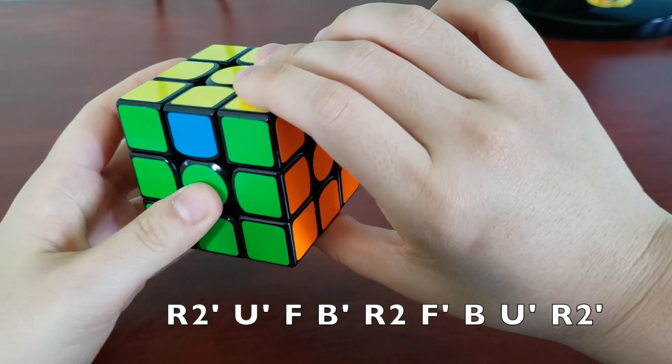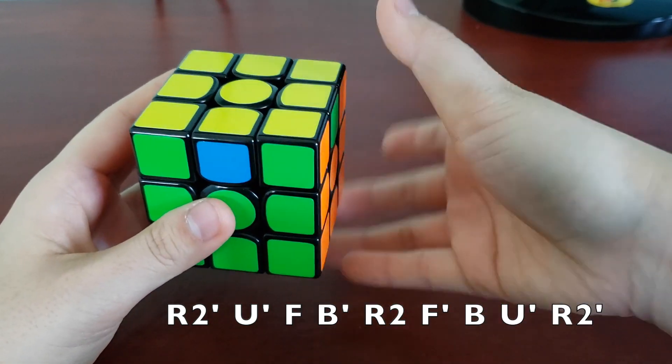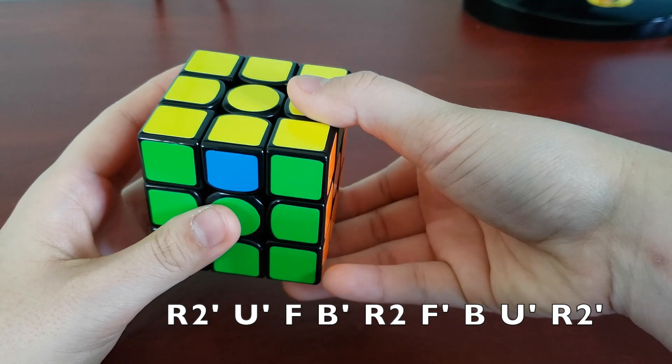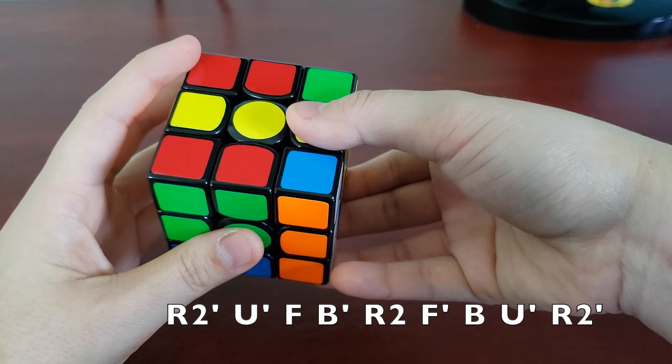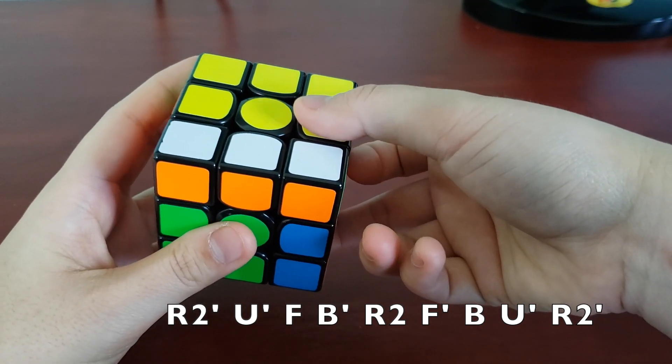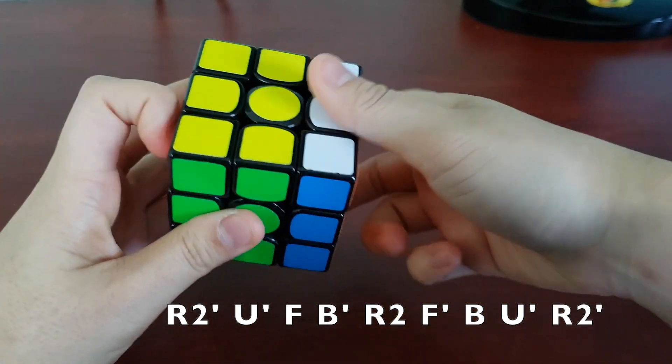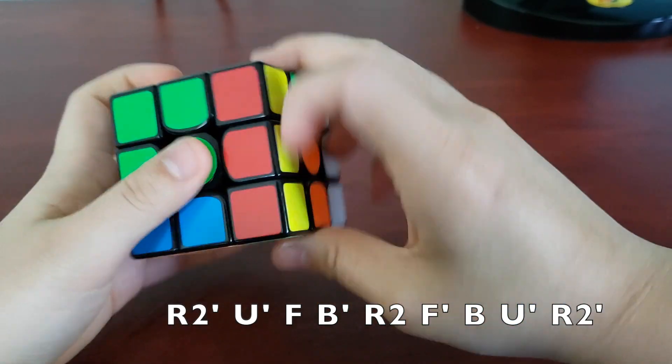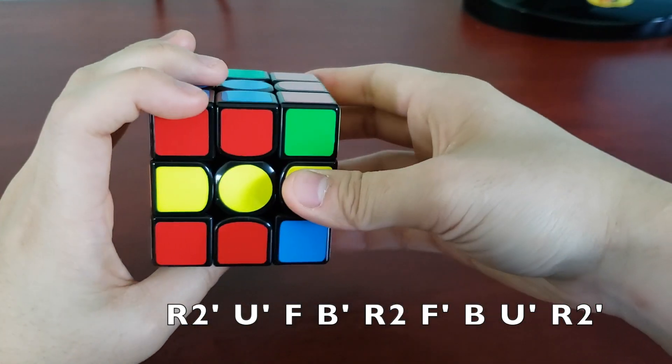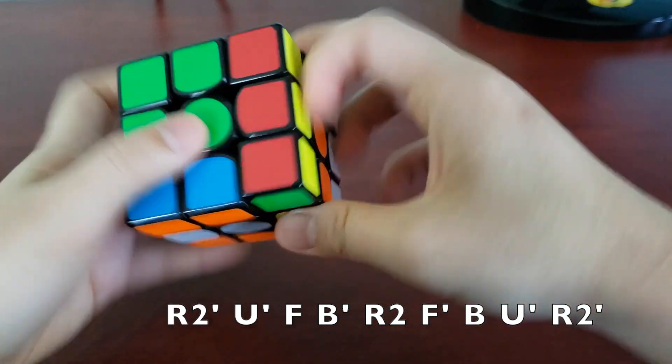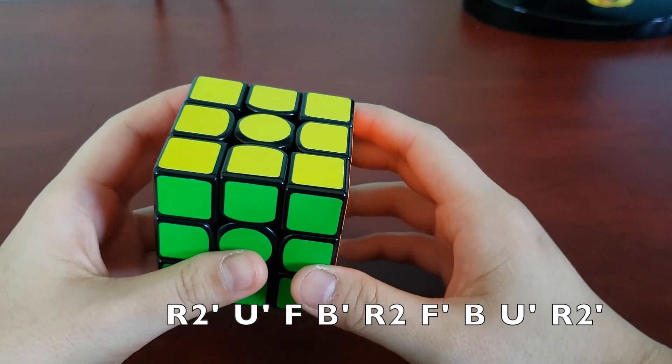So the right hand kind of is doing this in a big motion, which is why I re-grip at the beginning. So re-grip starting here, U prime, F B prime, R2, F prime B, U prime, and then fix. So a little bit faster. So that's what it looks like executed quickly.